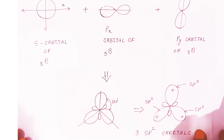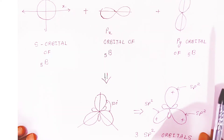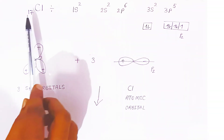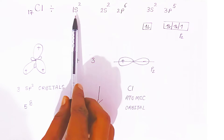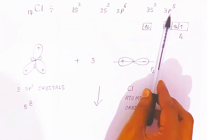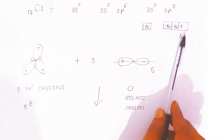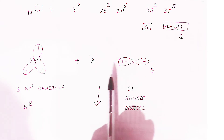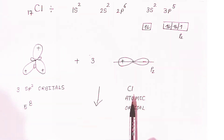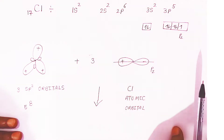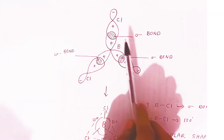These three sp2 hybrid orbitals of boron will participate in bonding with chlorine. Chlorine has atomic number 17. The electronic configuration of chlorine is 1s2, 2s2, 2p6, 3s2, and 3p5. Because there is one unpaired electron in the 3pz orbital, this pz orbital will participate in bonding. Three chlorine atoms approach toward the three sp2 hybrid orbitals of boron and form three sigma bonds.